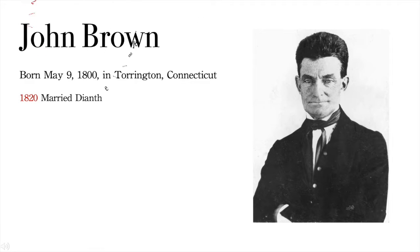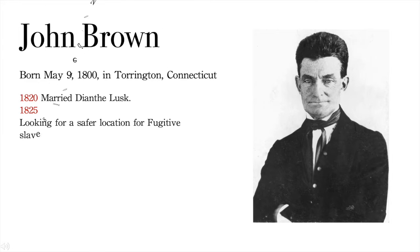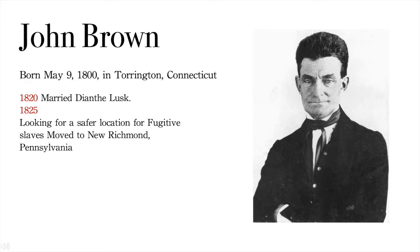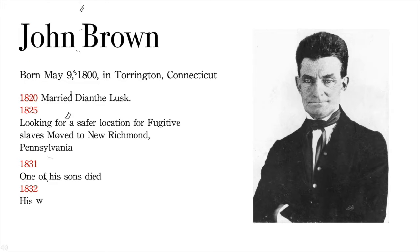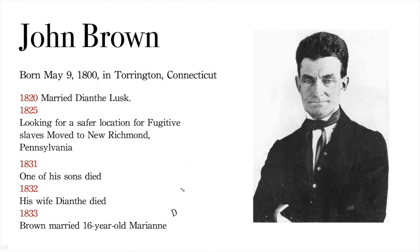In 1820, Brown married Dianthe Lusk, and their first child, John Jr., was born 13 months later. In 1825, looking for a safer location for fugitive slaves, Brown and his family moved to New Richmond, Pennsylvania, where he bought 200 acres of land and built a secret room to hide escaped slaves. In 1831, one of his sons died, Brown became ill, and his business began to suffer.